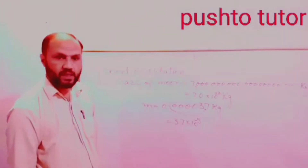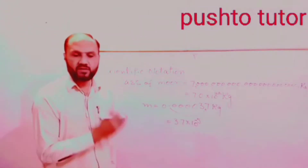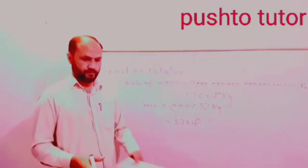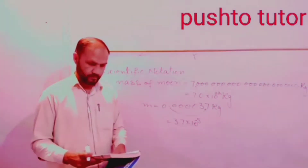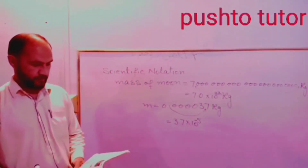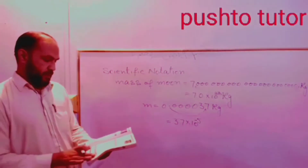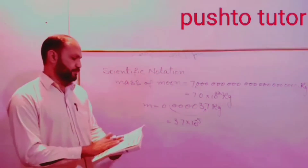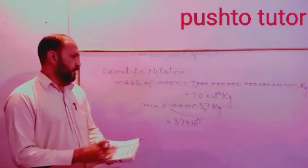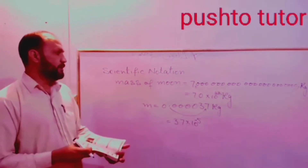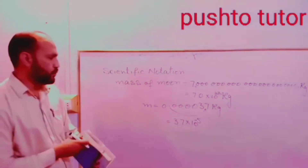To summarize the rule: if the decimal point moves to the right side, the exponent is negative; if it moves to the left side, the exponent is positive. The specific notation number follows this sign convention.